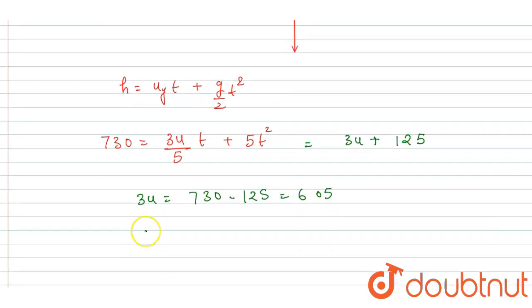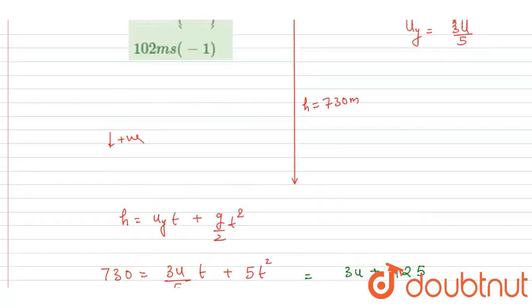Now we can write down u equals 605 by 3, which is nearly equal to 202 meters per second. Now you can check for the option—here B is the correct option.